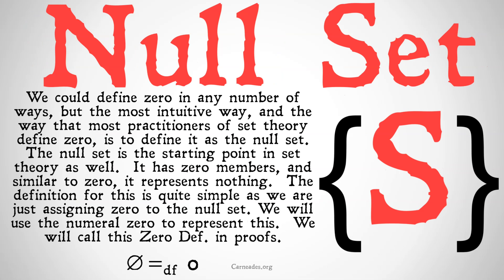We could define zero in any number of ways — we could define it as all sorts of different sets — but the most intuitive way, and the way that most practitioners of set theory define zero, is to define it as the null set. The null set is the starting point in set theory as well. It has zero members, and similar to zero, it represents nothing. The definition is quite simple: we are just assigning the numeral zero to the null set, and we're going to call this zero-def in proofs.